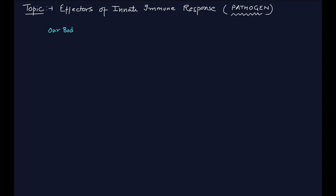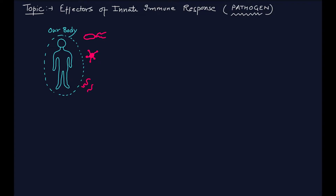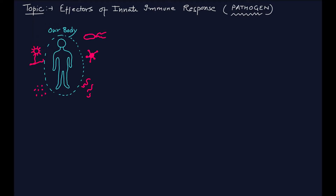Before I start this specific topic, I want to mention that our body is surrounded by various kinds of pathogenic organisms. There are bacterial cells trying to enter inside our body, there are viruses, there are worms, there are pathogenic fungi, and other types of organisms trying to enter our system. Our body is developing a defensive system against these organisms so that we can stay healthy.